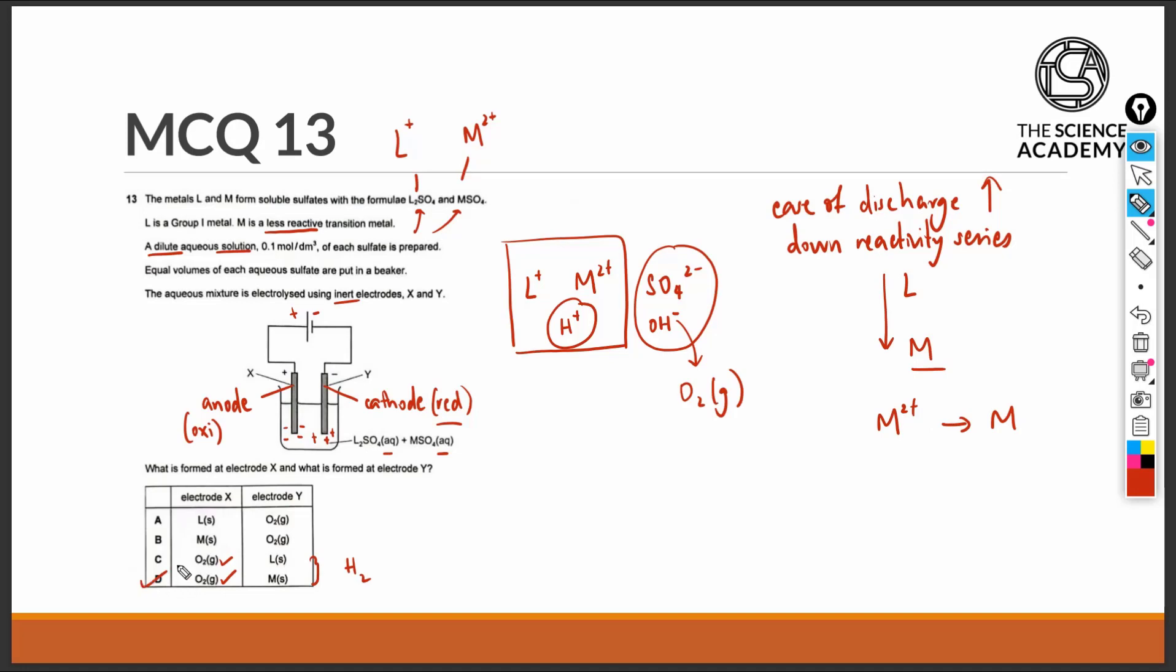Therefore, D will be the correct answer. In this case, since the M ion is preferentially discharged over the hydrogen ion, we can safely conclude that the M metal is less reactive than hydrogen in the reactivity series.